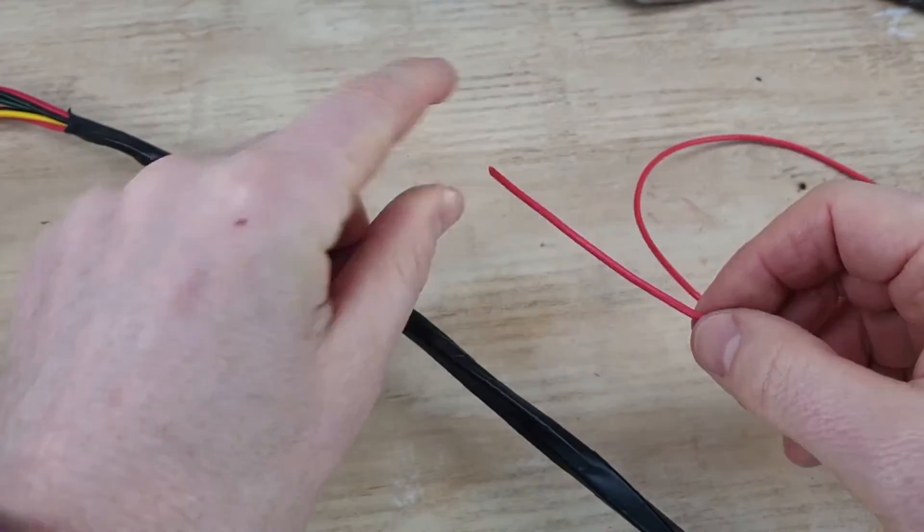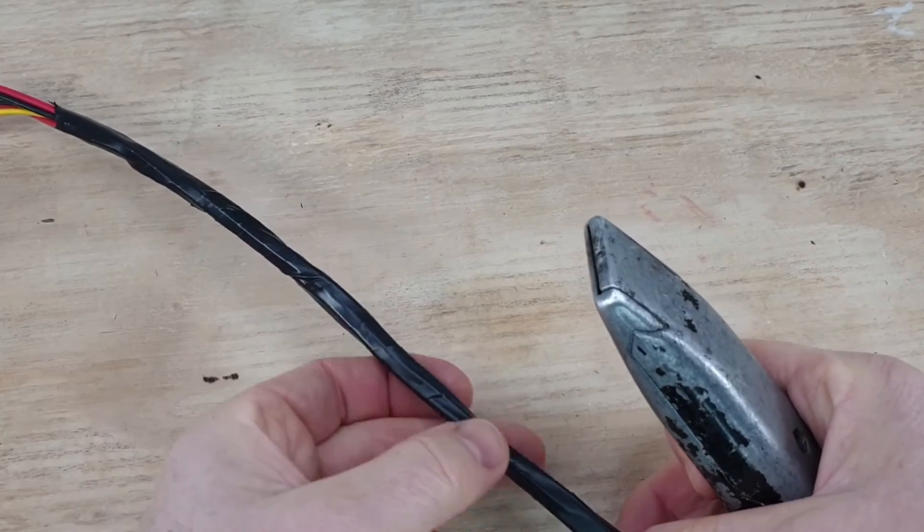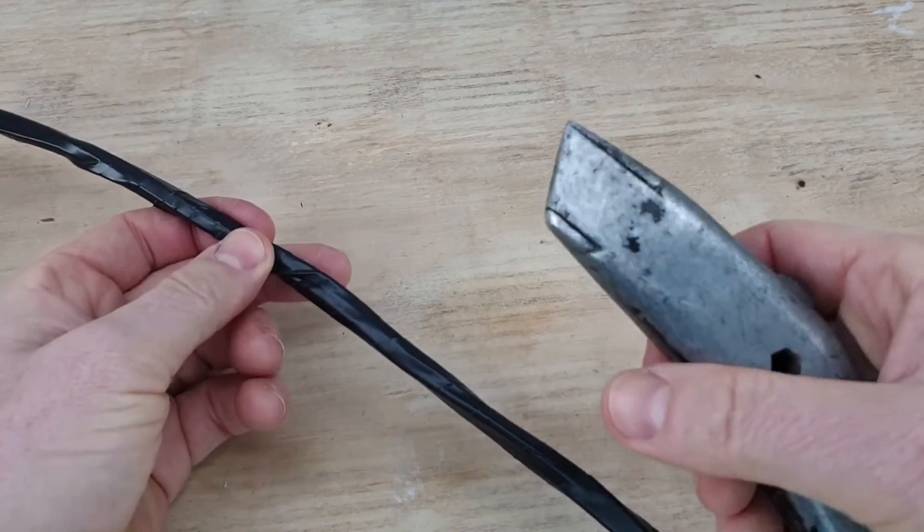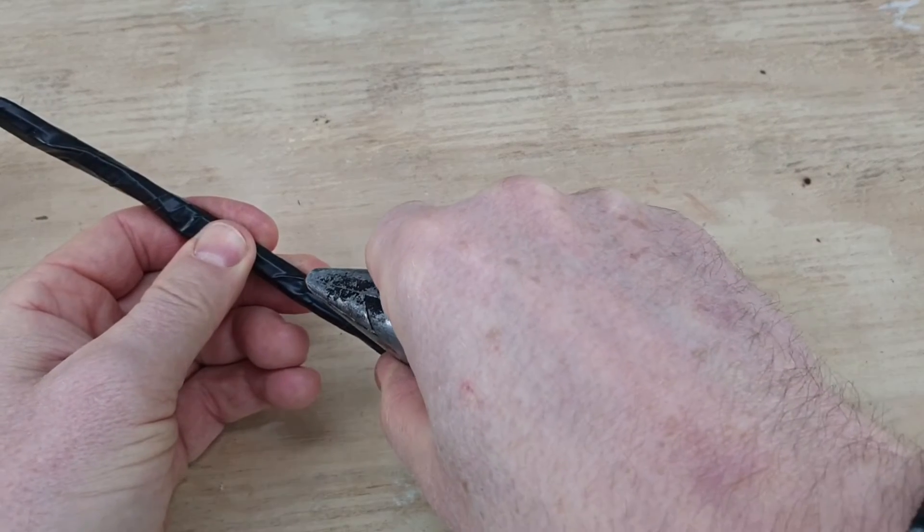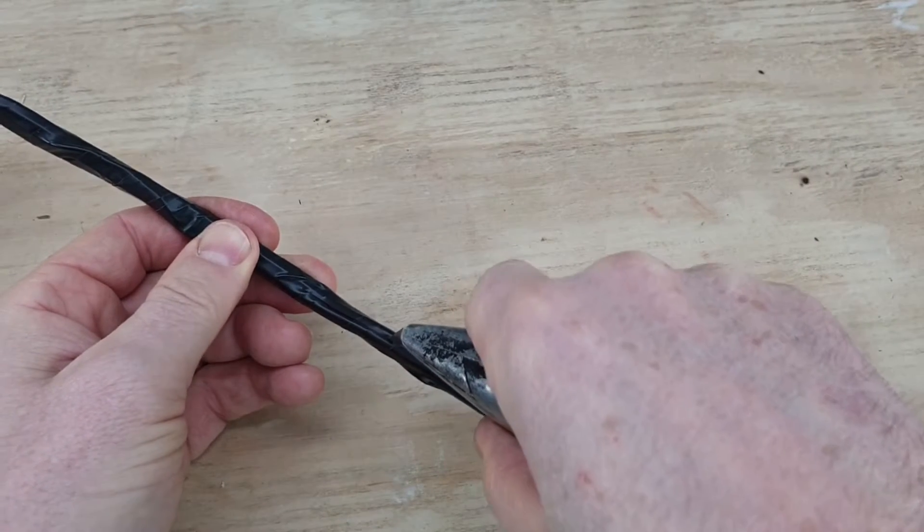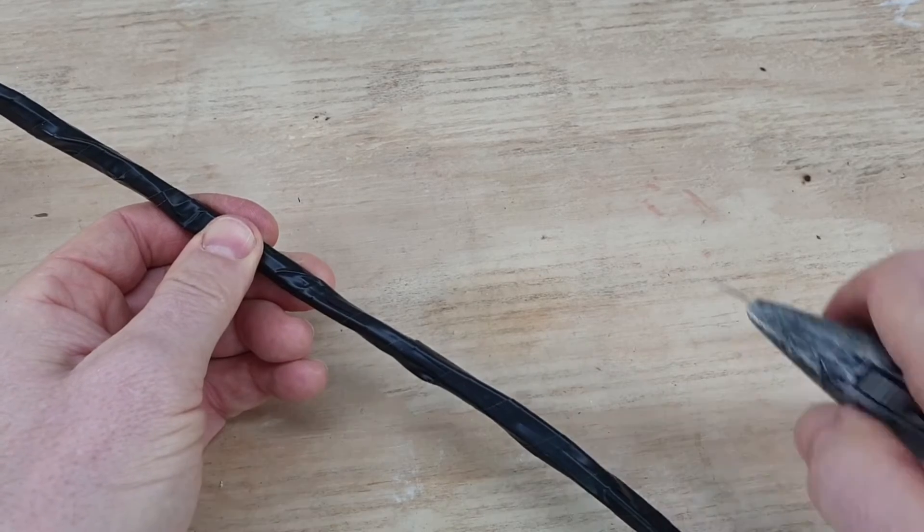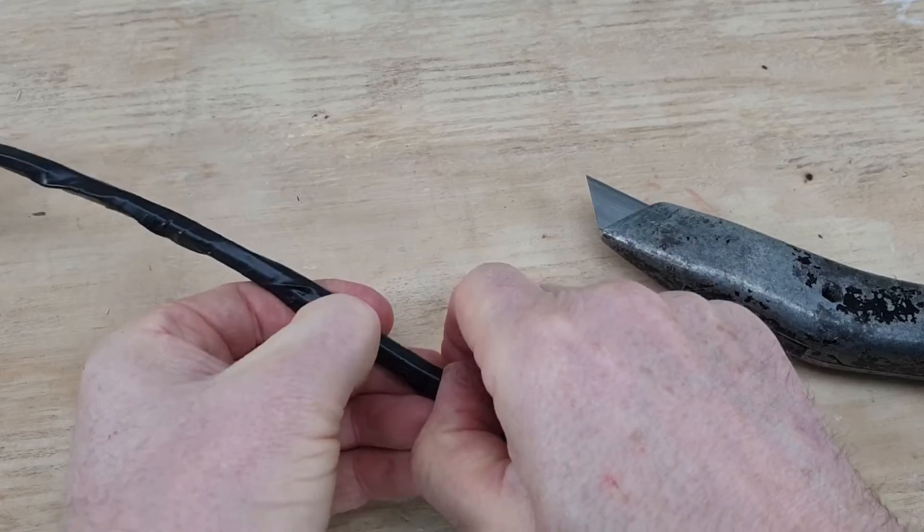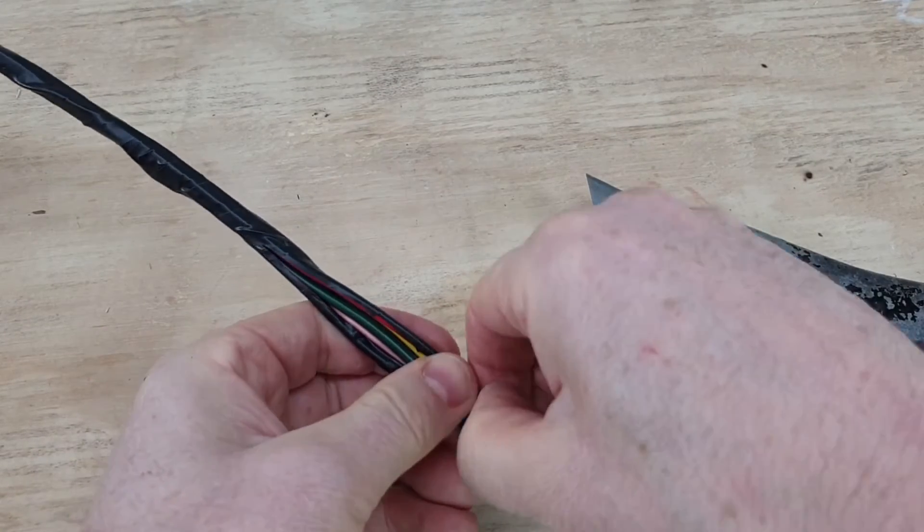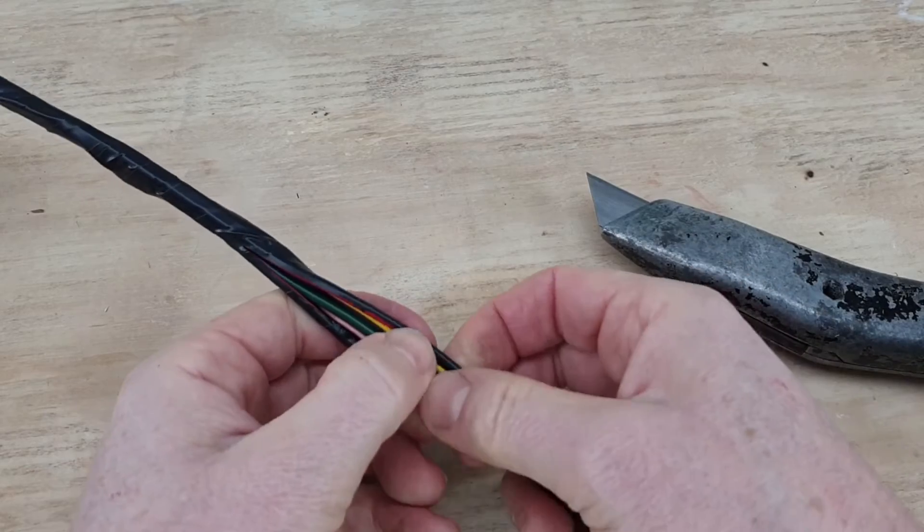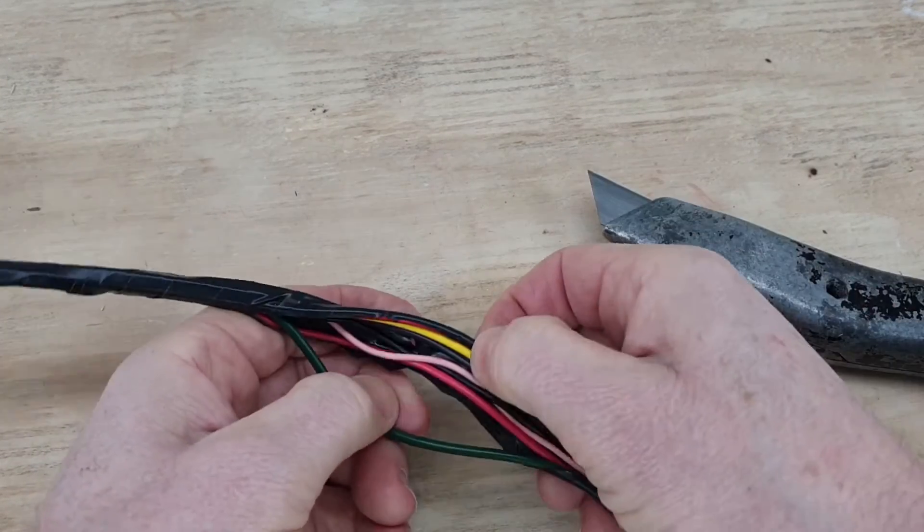So we want to join this into here. First thing we need to give ourselves some working space, so we find where the cables are lying next to each other in a good long run, and very gently use a sharp knife. Remember, a blunt knife is a dangerous thing, and with just hardly any pressure, just enough to get the tape open. Don't be frightened of giving yourself enough space to work. If you make it too difficult for yourself, that's when problems occur.